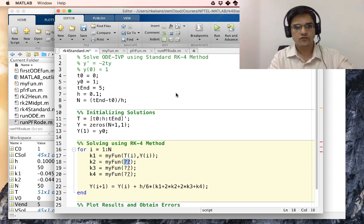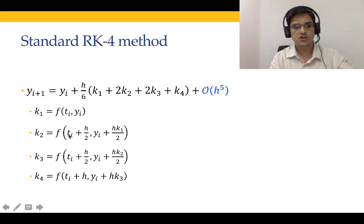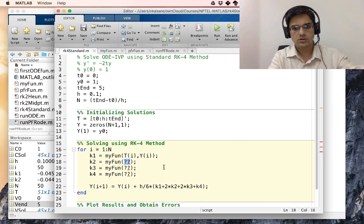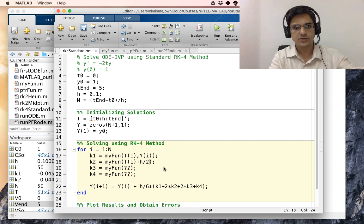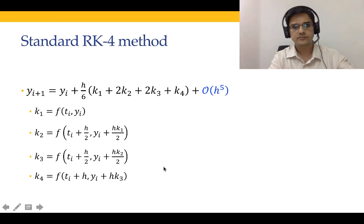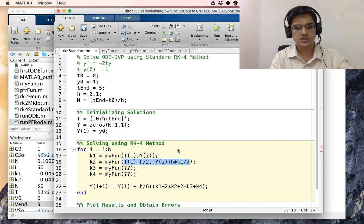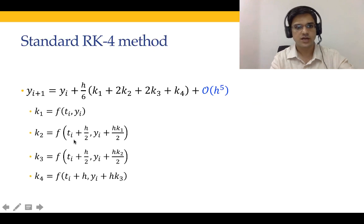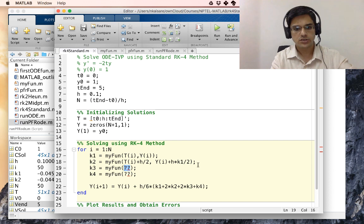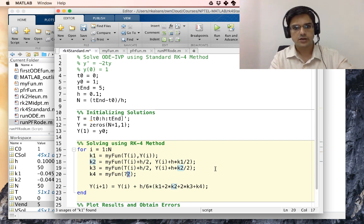Our K2 was function of T I plus H by 2 comma YI plus H K1 by 2. I will just copy this and paste it in K3 and we will do the modification as required. K3 is T I plus H by 2 again, but YI plus H multiplied by K2 by 2. So instead of K1 by 2, we now have K2 by 2. So let us paste and the only thing that needs to change is K1 is to be changed to K2.